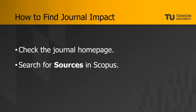So, how do we find journal impact? One way is checking the home page of an individual academic journal. Sometimes, if a journal is particularly impactful, it will prominently display Impact Factor or other metrics on its home page to persuade researchers to subscribe or publish within it. You can usually find a journal's home page through a quick Google search — just put the title of the journal in quotation marks for best results.